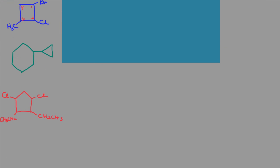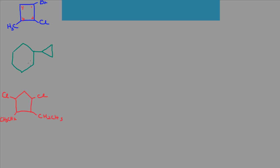This one here is a little different. We have two rings — a six-member ring and a three-member ring. In this case, we'll name the six-member ring as a cyclohexane and the three-member ring as a cyclopropyl group. So what we have is cyclopropyl-cyclohexane.